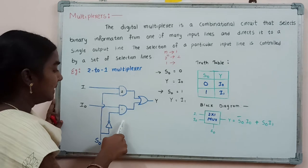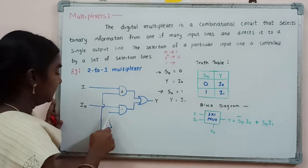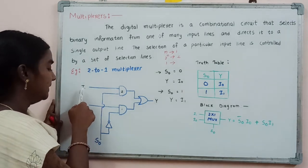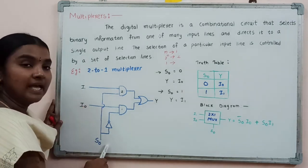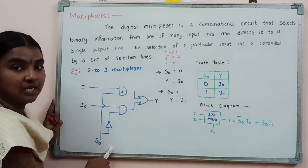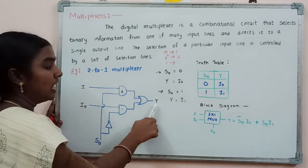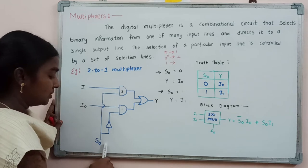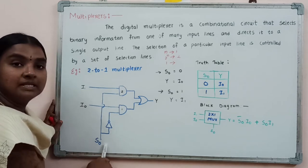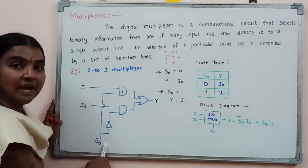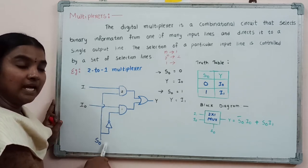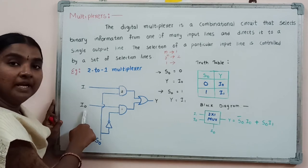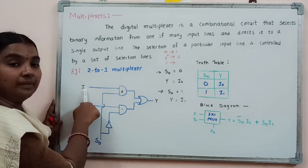The input lines are labeled i0 and i1, s0 is the selection line, and y is the output. Based on the binary value of selection line s0, we select either input line i0 or input line i1.